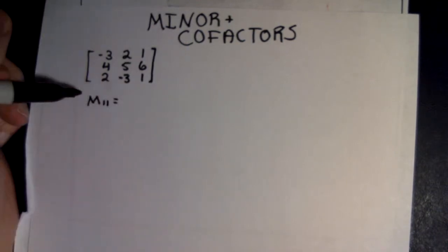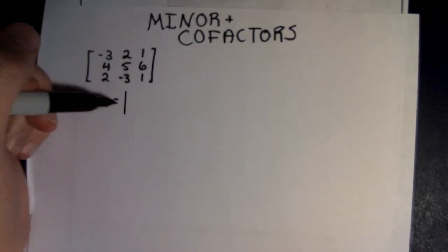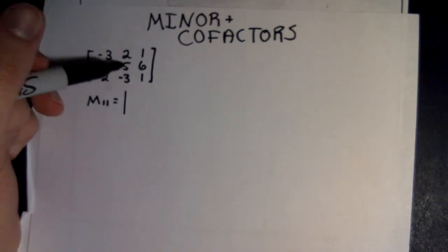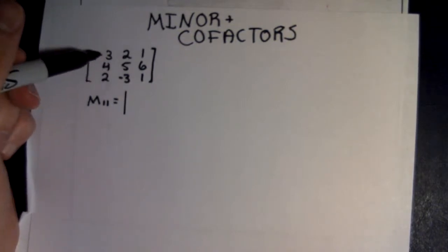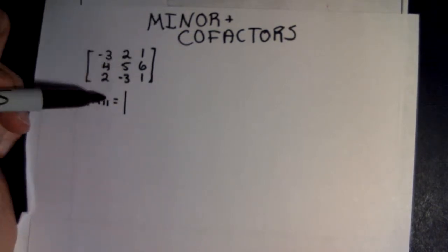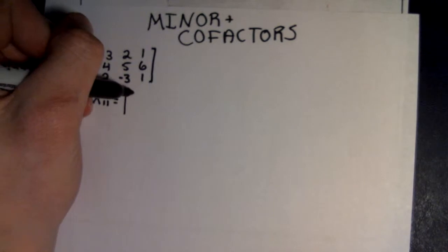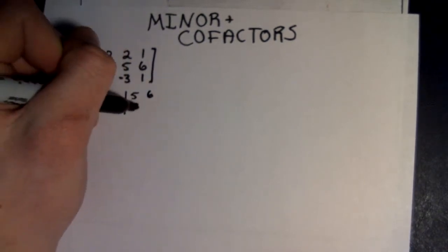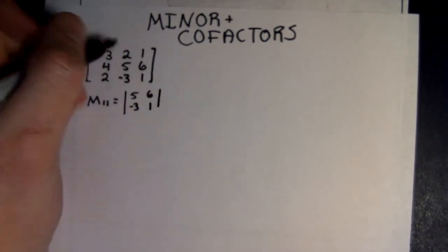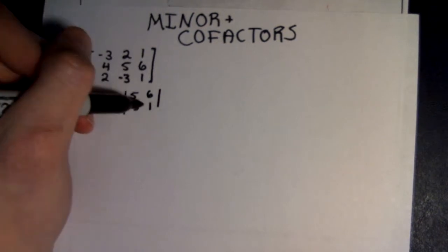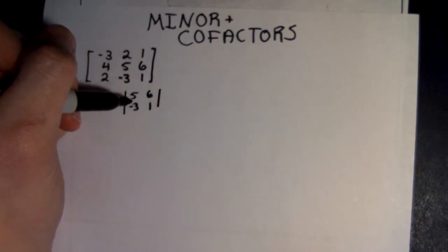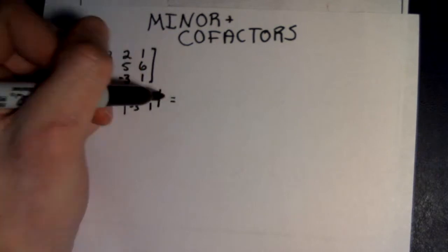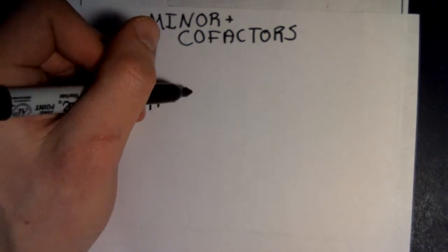Let's start with M11. To find the minor, we take the determinant of this matrix after getting rid of the first row and first column. So you find the determinant of 5, 6, negative 3, and 1. That's 5 minus negative 18, which is equal to positive 23.